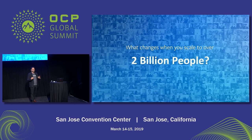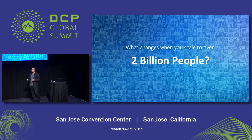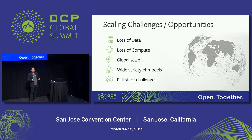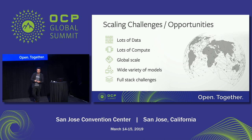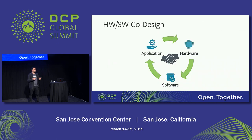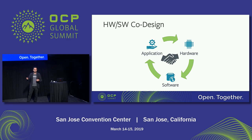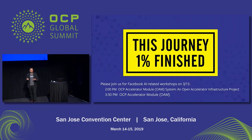What really changes when you try to scale to serve two billion-plus people? This is a lot of compute to do to serve all these people. It really comes down to addressing all the scaling challenges: lots of data, lots of compute, scaling globally across a wide variety of models with their own complexities, and full-stack-level challenges. To address this, hardware-software co-design is a crucial aspect — whatever hardware you're designing, whatever software sits on top of it, they must be coherently designed together. Application, hardware, and software all need to work together for all this to work. This journey is really only 1% finished. Please join us for AI-related workshops tomorrow at 2 o'clock on OCP OAM module with Whitney, and at 3:30 on the OCP OAM module specifically. Thank you.